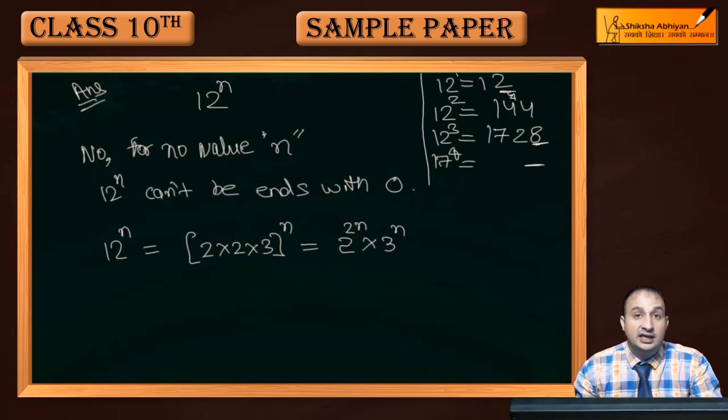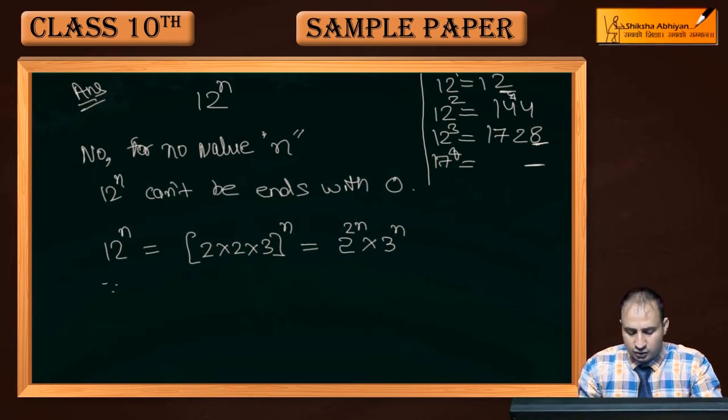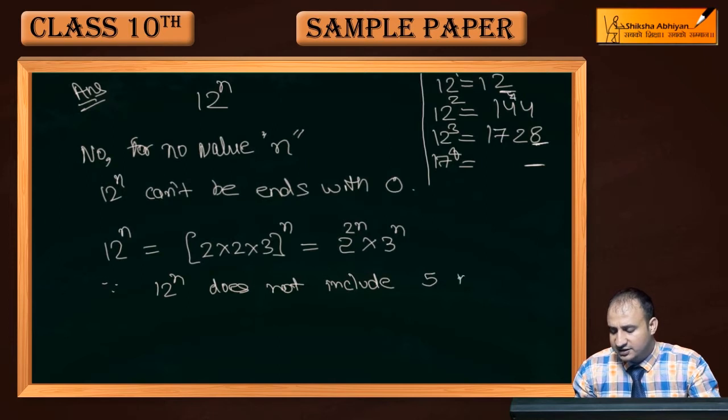Now, for the last digit to be 0, we need both 2 and 5 as factors, because last digit 0 means 10, and 10 has both 2 and 5 as factors. Now, 2 is included in the prime factorization, but 5 is not included. Since 12 to the power n does not include 5 in its prime factorization.